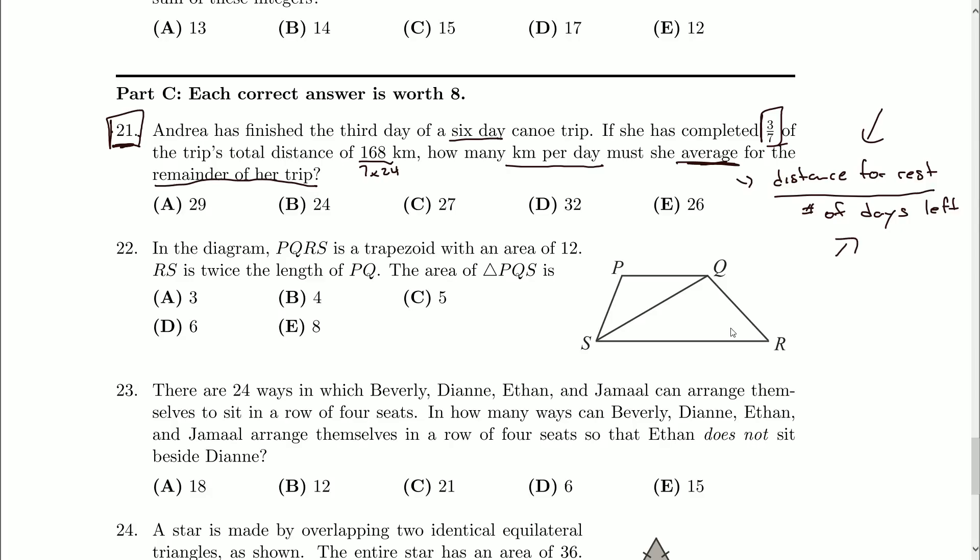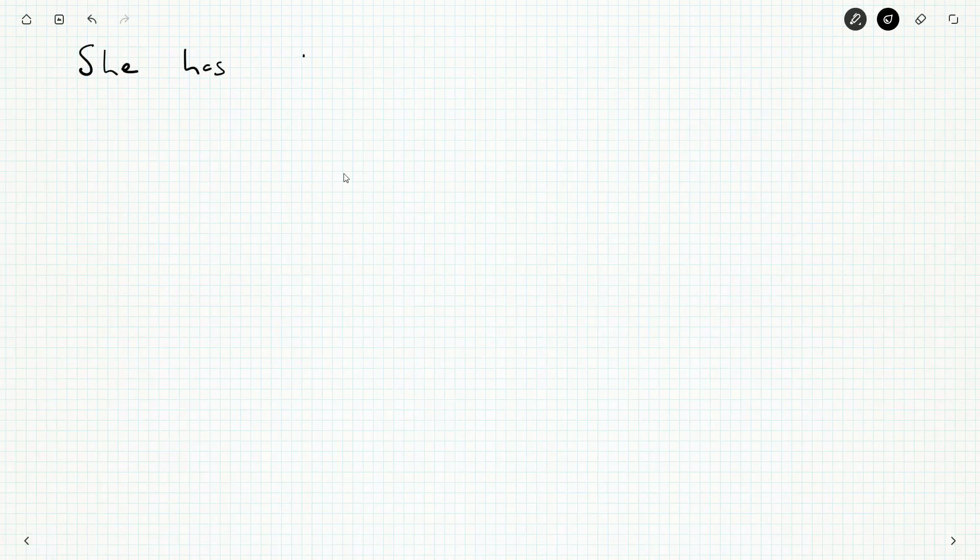Well, we do know that she finished the third day of a six-day canoe trip. So she has the fourth, fifth, and finally the sixth days of her canoe trip. And that's three days left. So she has three days left in her trip.